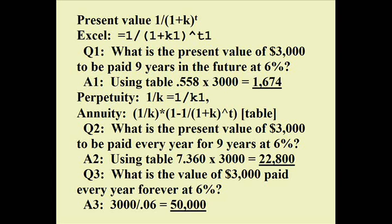Here are some numeric examples. First, we want the present value of $3,000 to be paid in the ninth year at 6%. We go to the single sum table — recalling the factor is always less than one. The factor is 0.558. Multiply it times $3,000 and we get $1,674.